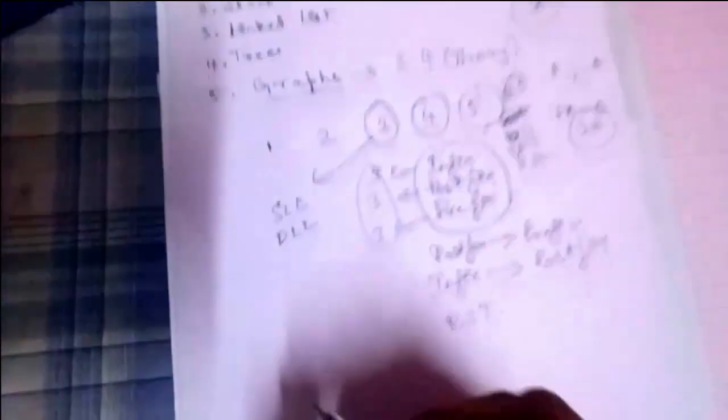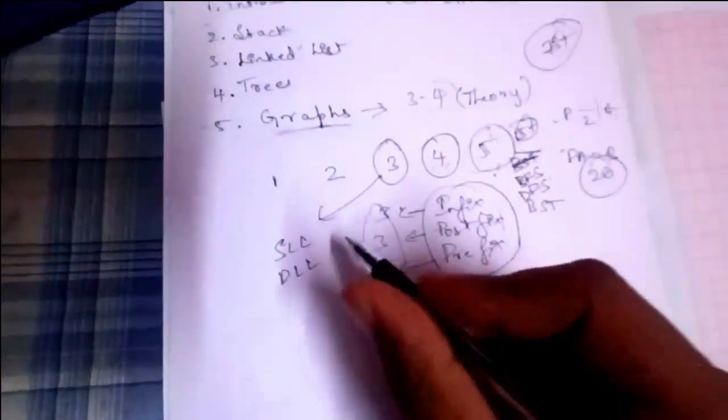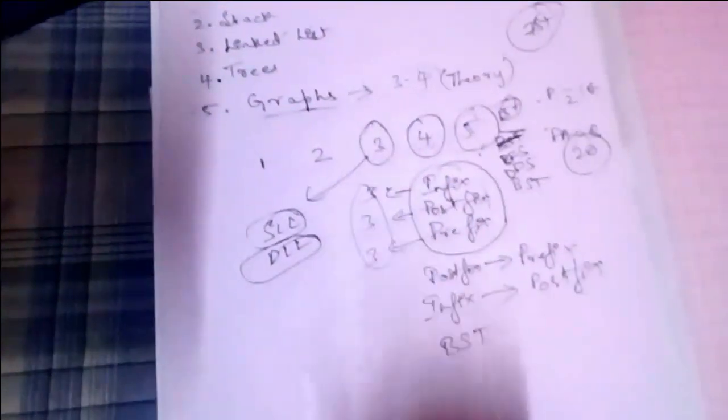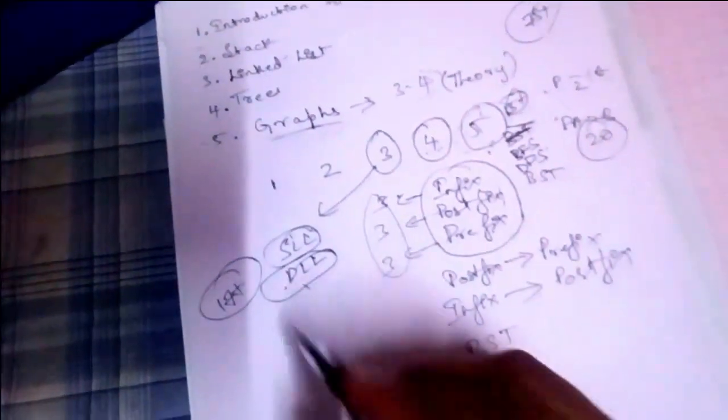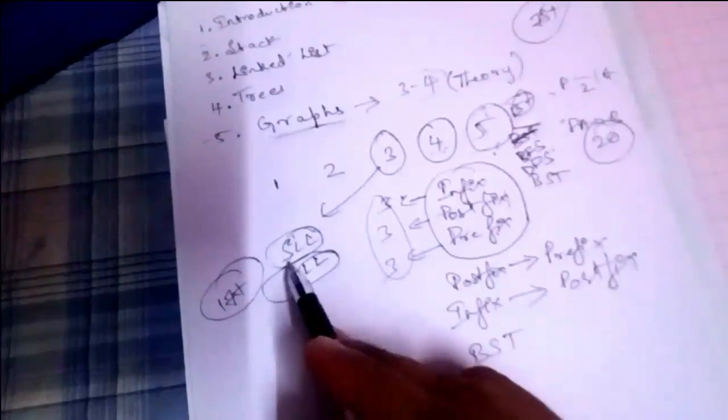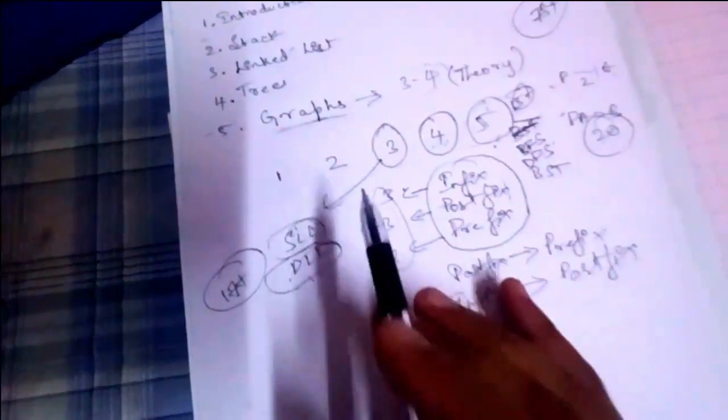For the third module, Linked List, the most important questions are on Singly Linked List and Doubly Linked List. I suggest you study only these two programs thoroughly. If you study both, you will get 17 plus marks. Singly Linked List and Doubly Linked List are very, very important topics in the third module.